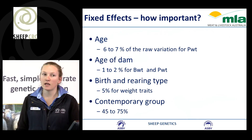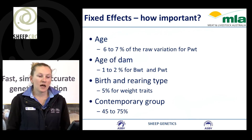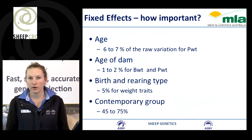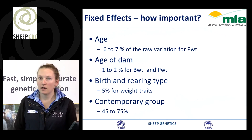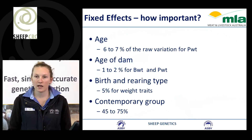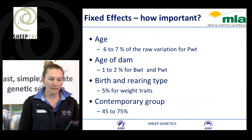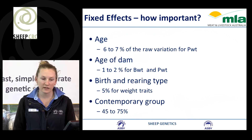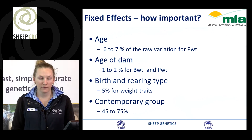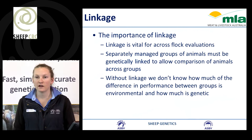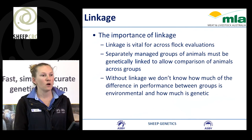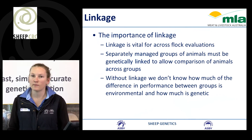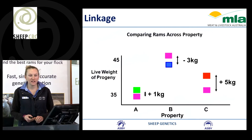How important is it to account for these things? Difference in age can account for 6 to 7% of the raw variation for post-weaning weight. Age of the dam can account for 1 to 2% for birth weight and post-weaning weight. Birth and rearing type can account for 5% difference for weight traits. And contemporary group can account for 45 to 75% of the variation, so if we don't have the right contemporary group or know how those animals have been run, we can be missing out on accounting for a large portion of variation in performance.